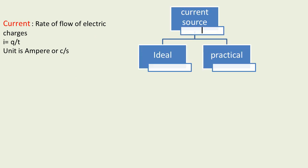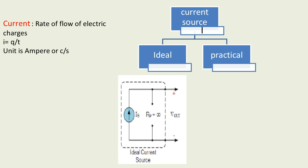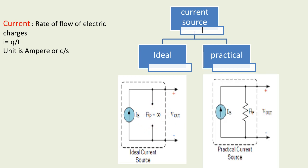We have a current source, which is denoted by an arrowhead symbol — unlike a voltage source which has positive and negative terminals. The arrowhead indicates the direction of current flow. For an ideal current source, the internal resistance is infinite, and for a practical current source it has a certain finite value. All the current sources we use in daily life are practical current sources.